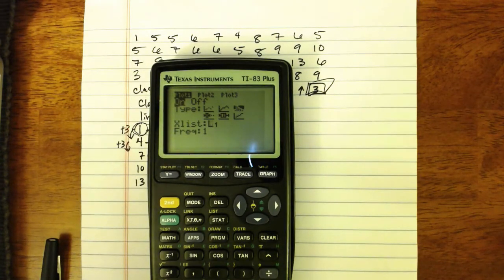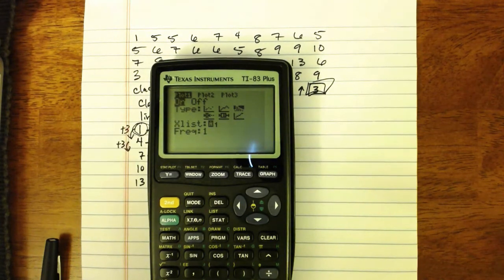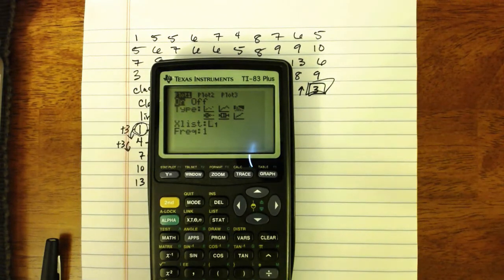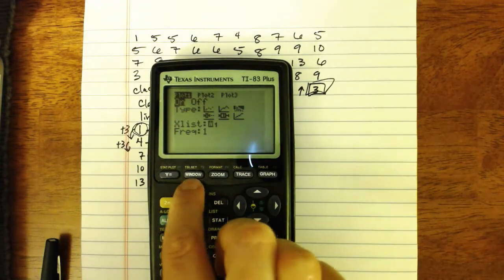because the back of the book, if you want to check your answer, has forced our hand in terms of how many classes to use, if I use zoom 9, it lets the calculator pick the number of classes, and chances are it won't pick the same number of classes as our textbook. So I will need to manually adjust the window.